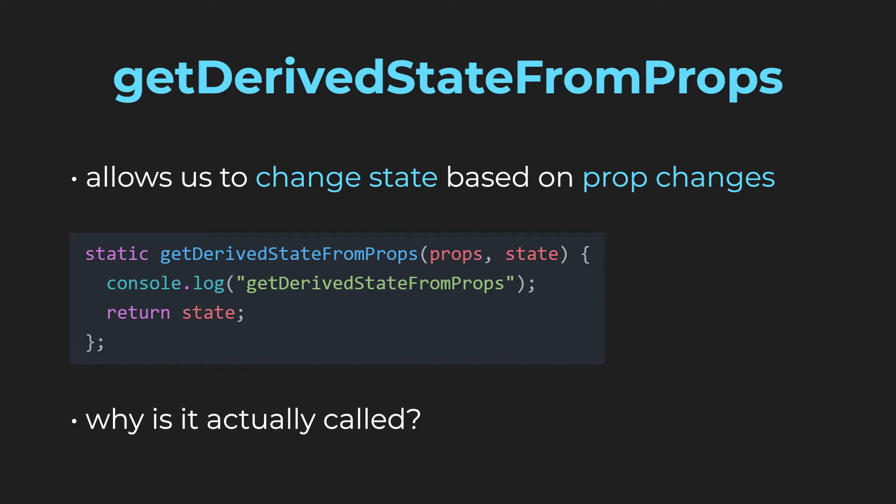You might wonder why GetDerivedStateFromProps is actually called in this component when we are just changing state, not props. If we take a look at the parameters — props and state — the method depends on props, so it is called after a prop change, but it also depends on state, so it only makes sense that it is called after a state change as well. If this method was called GetDerivedStateFromPropsAndState, this would be much easier to understand.